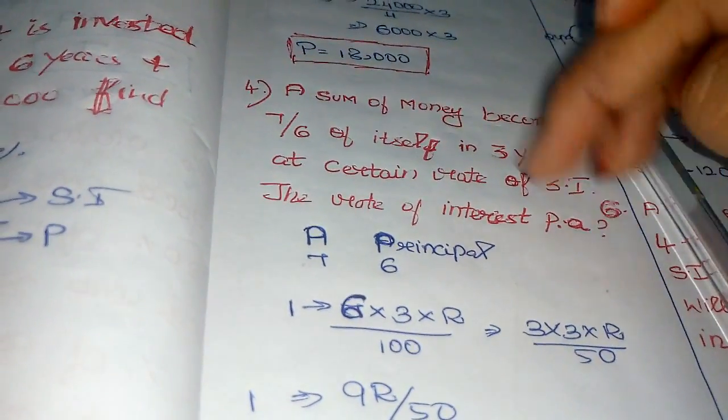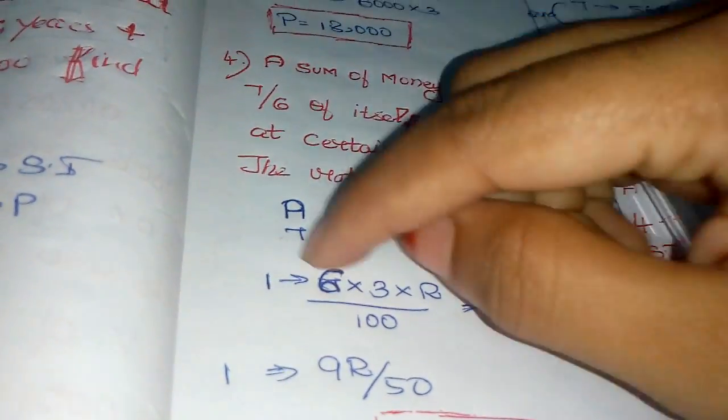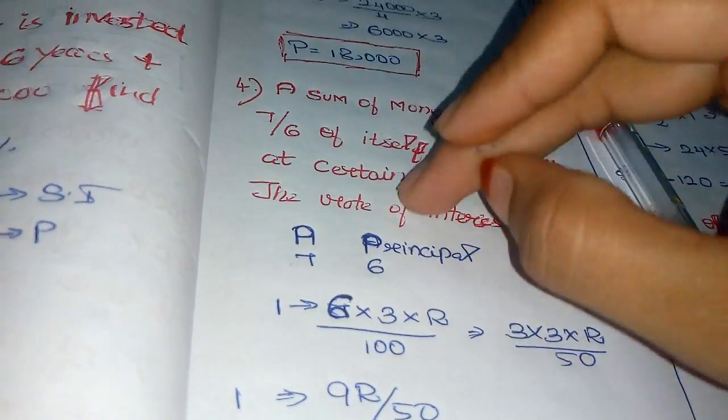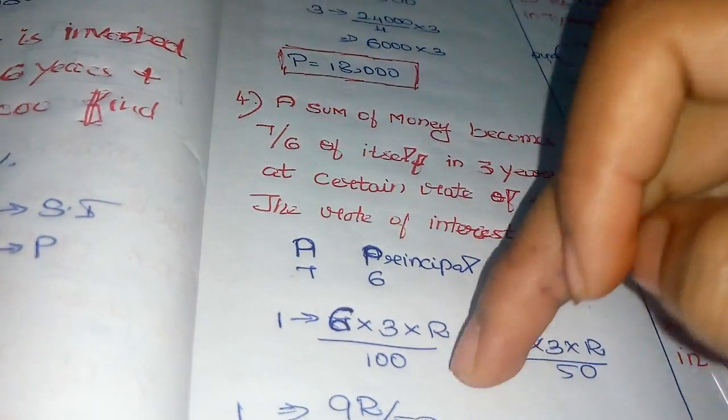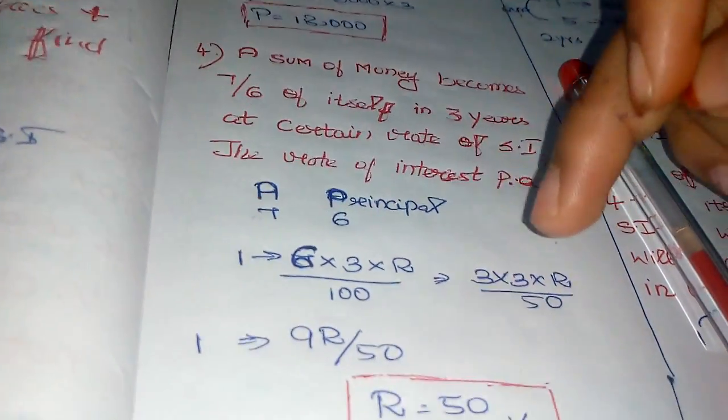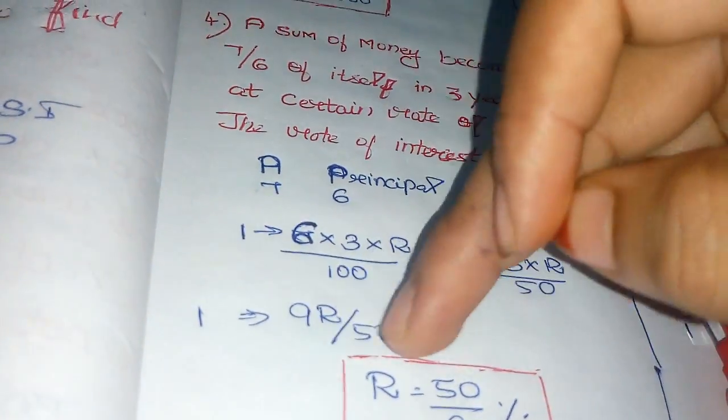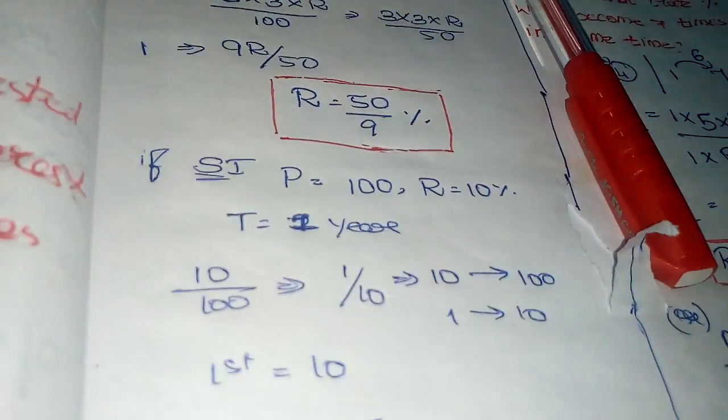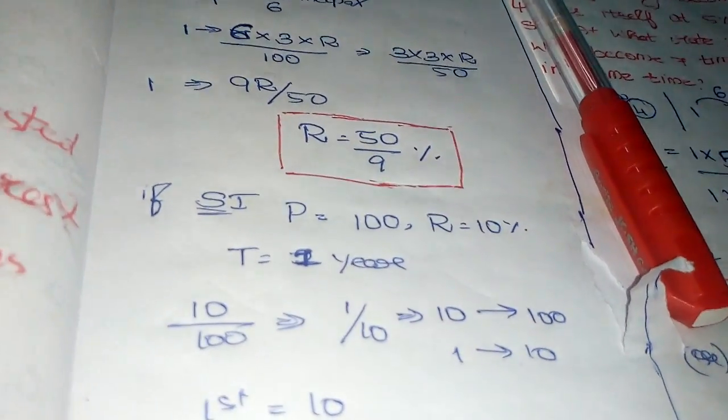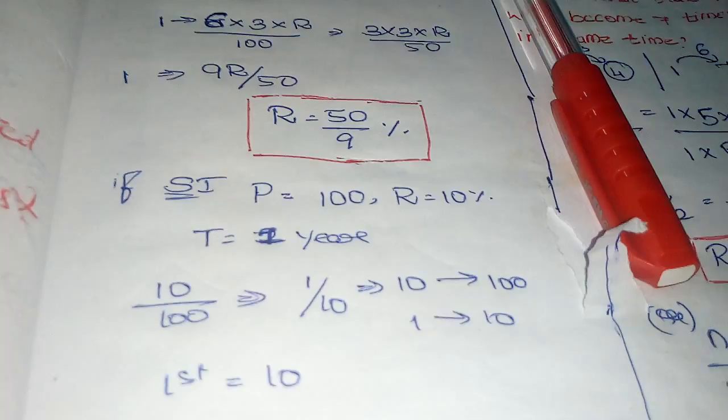Formula: P×N×R/100. Principal is 6 into 1, 3 years into R divided by 100. Cancel to get 9R/50. One part equals 50/9 percentage. Then in the sum of the time...